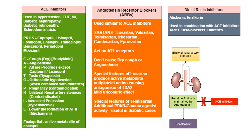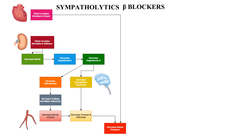Direct renin inhibitors — aliskiren and enalkiren — are used only in combination with ACE inhibitors, ARBs, beta blockers, and diuretics.